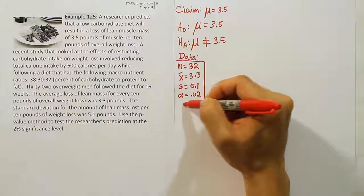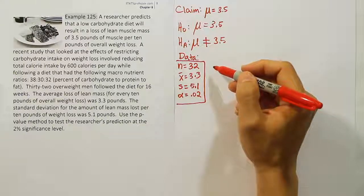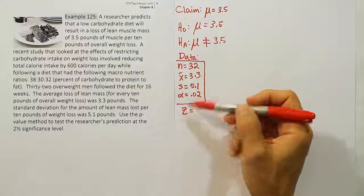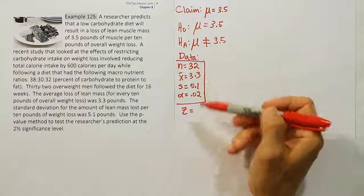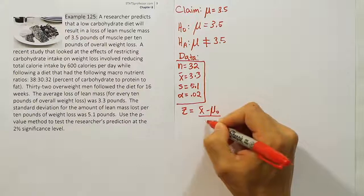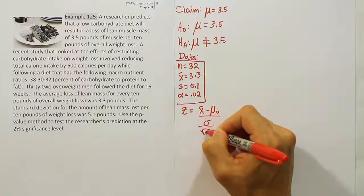Let's take that data now and use it in the test stat formula. We're going to say Z equals... Why do I choose Z? Because my n is large, it's over 30. So Z = (x̄ - μ₀) / (σ / √n).